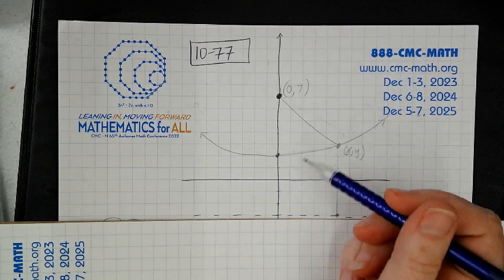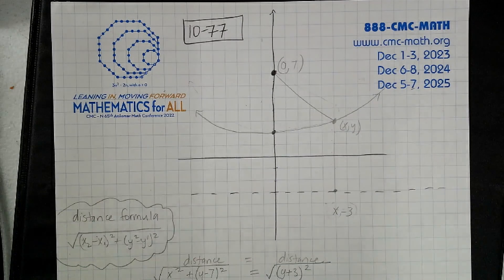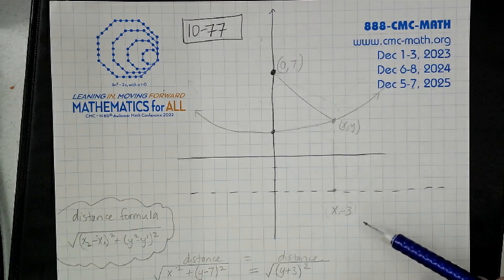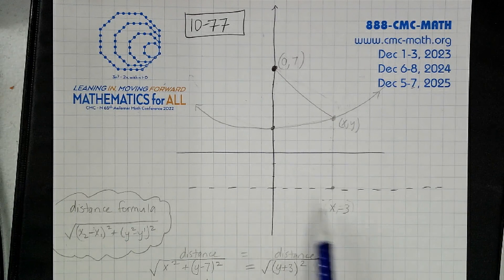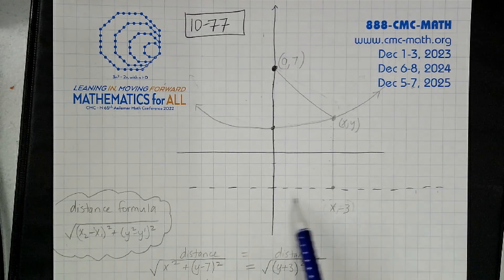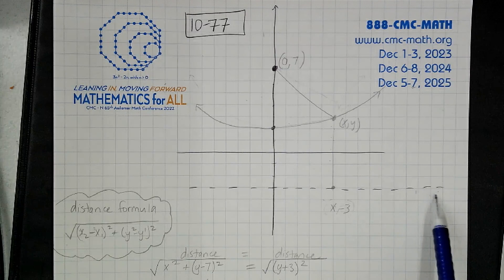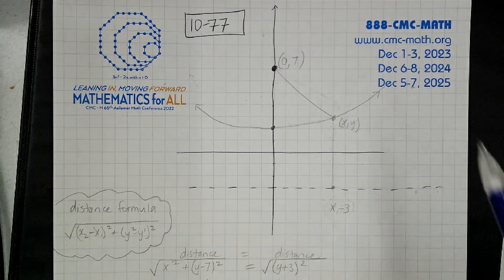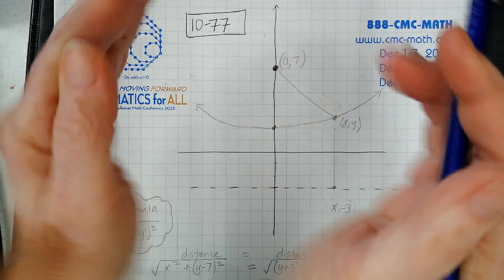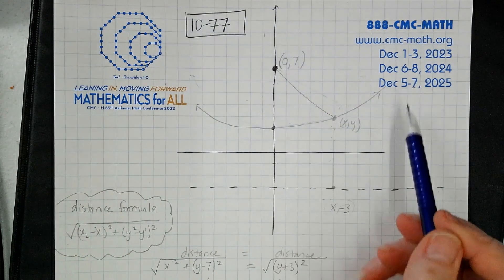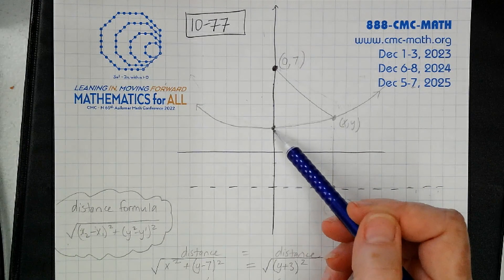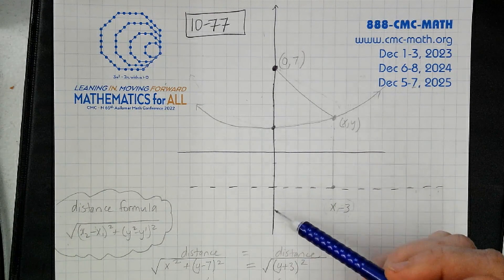It's hard for me to draw this. You can see I had to erase. What I did is I took our focus and put it at (0, 7) and I took our directrix and put it at negative 3. Parabolas always open inward onto their focus, so it's going to be an upward facing parabola and the vertex of the parabola is going to be exactly in between the focus and the directrix.